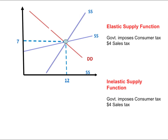In this session we are going to be studying the tax burden of a consumer sales tax. Despite the fact that a sales tax is imposed solely on consumers, the burden might be shared between consumers and producers, and this happens because the sales tax might change the equilibrium price.